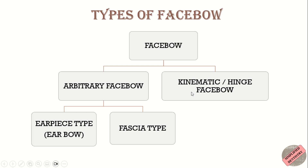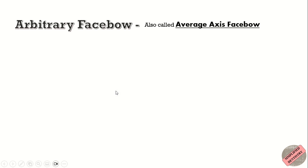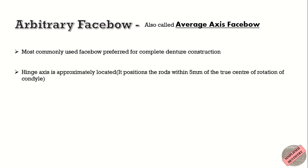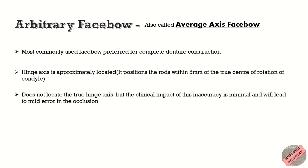The arbitrary face bow is further divided into earpiece type and fascia type. It is also called the average axis face bow and is the most commonly used face bow, preferred for complete denture construction. The hinge axis is approximately located and it positions the rod within 5 mm of the true center of condyle rotation. This method does not locate the true hinge axis, but the clinical impact of this inaccuracy is minimal.